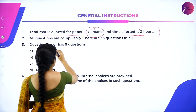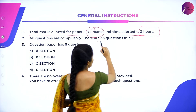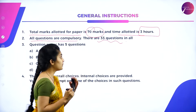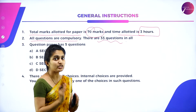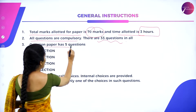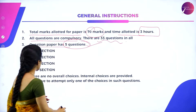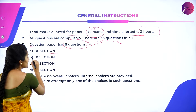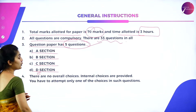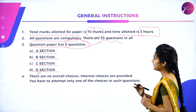All questions are compulsory. There will be approximately 33 questions — plus or minus one. We can't predict the exact number, but 33 is the general standard. The question paper has 5 sections: Section A, Section B, Section C, Section D, and Section E.